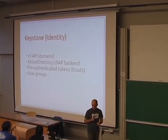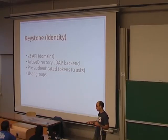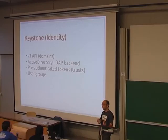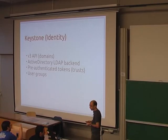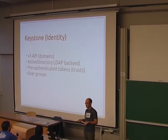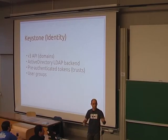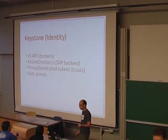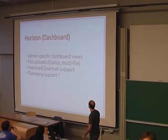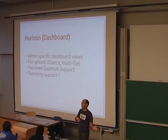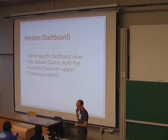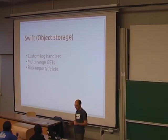Keystone introduced a new version of their API which adds the notion of domains, an Active Directory backend to store credentials, support for pre-authenticated tokens that generate tokens valid for a future action, and user groups. Horizon's focus is on keeping up with all the features the other projects add, especially in the networking area.